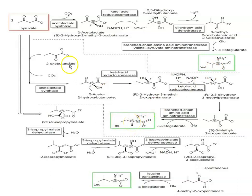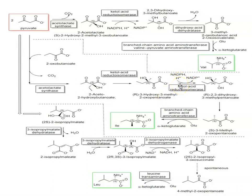Next is biosynthesis of isoleucine. Here, pyruvate is first converted into 2-aceto-2-hydroxybutanoate using enzyme acetolactate synthase. Then, enzyme ketolacid reductoisomerase converts this compound into 3-hydroxy-3-methyl-2-oxopentanoate, consuming one NADPH + H+, to form 2,3-dihydroxy-3-methylpentanoate. This compound is then converted into 3-methyl-2-oxopentanoate, and ultimately isoleucine and alpha-ketoglutarate are formed using branched-chain amino acid aminotransferase.